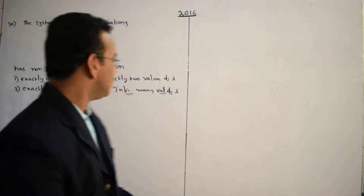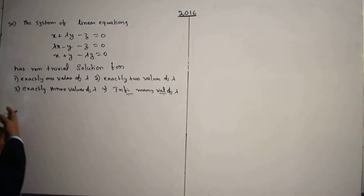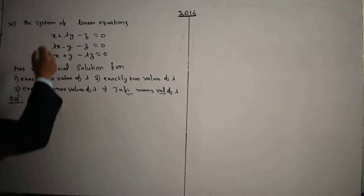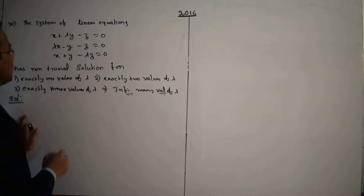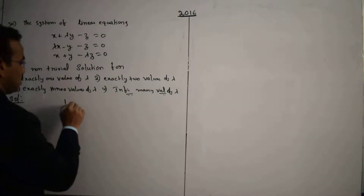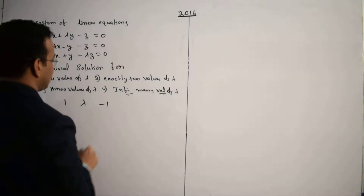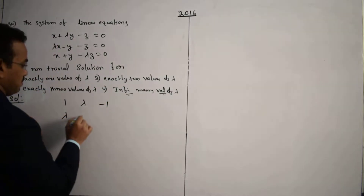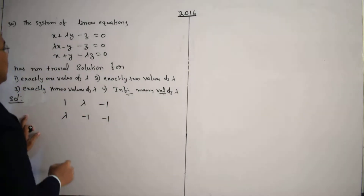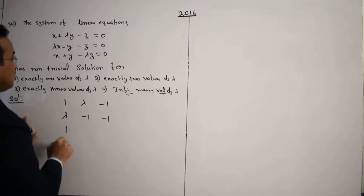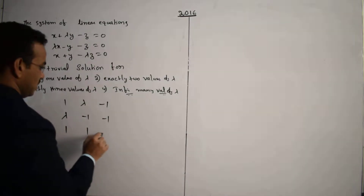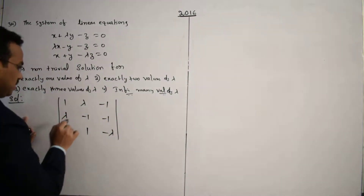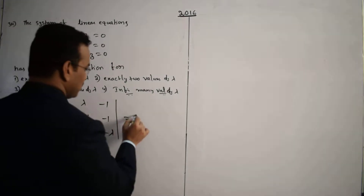Now let's start the solution. Take the coefficient matrix: the matrix is [1, λ, -1; λ, -1, -1; 1, 1, -λ]. We take the determinant of this coefficient matrix and set it equal to 0. From this we can decide the λ values.